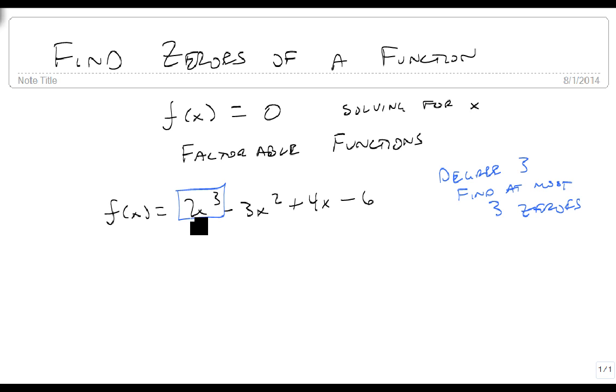In this case we have four terms, so we're going to split them in half and look at those terms separately. 2x cubed minus 3x squared has an x squared in common, which leaves 2x minus 3. And 4x minus 6 has a 2 in common, which leaves 2x minus 3. Notice we have 2x minus 3 here.